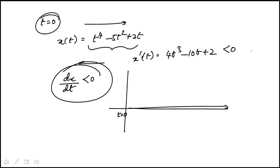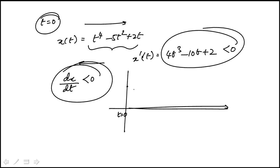You can use the graphing calculator. If you graph it, it's going to look something like that, and these are the two key points. Between these two points, the derivative is negative — it's below the x-axis.